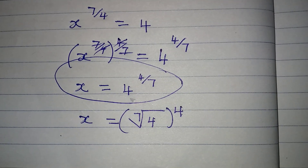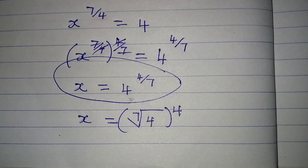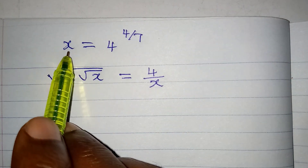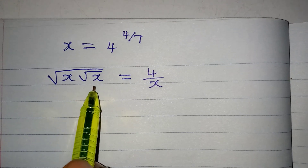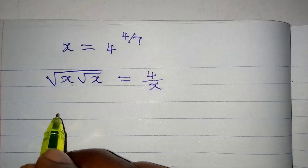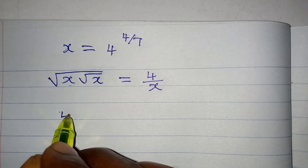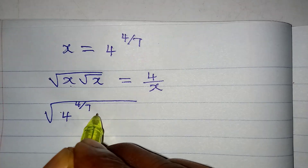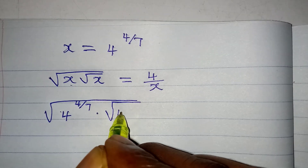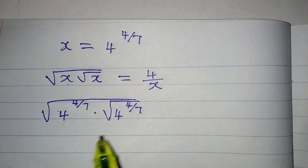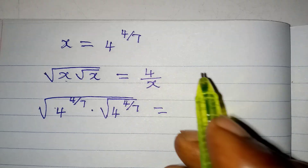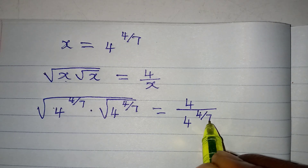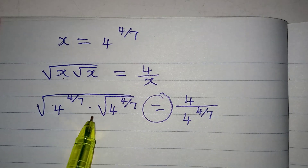Now let's substitute this back into the original equation to verify. Replacing x with 4 to the power of 4 over 7, the left-hand side becomes the square root of 4 to the power of 4 over 7, multiplied by the square root of 4 to the power of 4 over 7. The right-hand side becomes 4 over 4 to the power of 4 over 7. The question is: will these be equal?